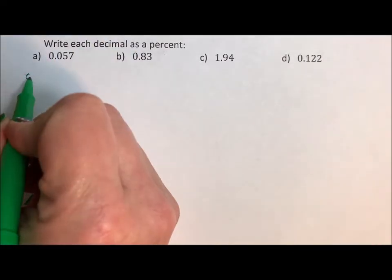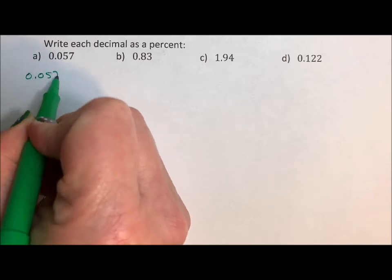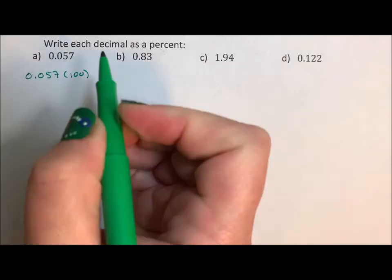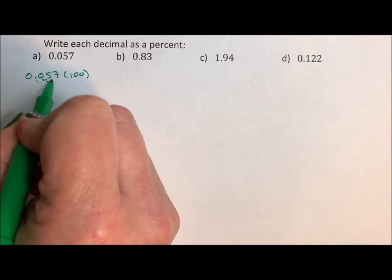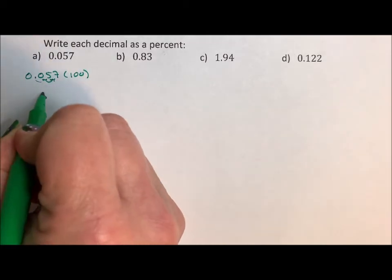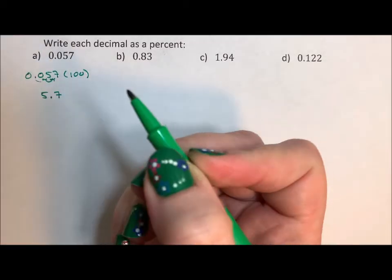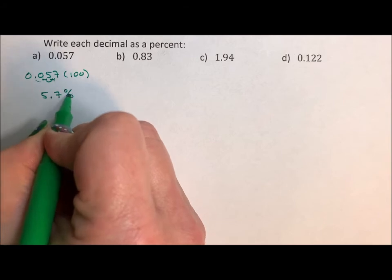So if we take 0.057 and we multiply it by 100, that moves our decimal point over two spots. We get 5.7 per 100, but we just say percent.